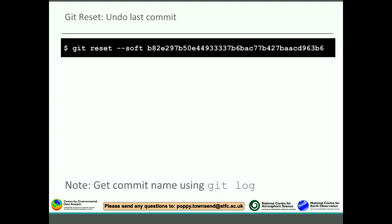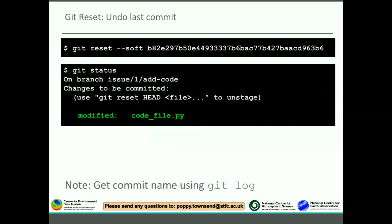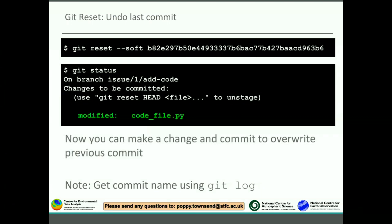To undo your last commit - say you've made a commit and realized there was a mistake - you can use git reset --soft followed by your git reference (a commit hash). You can get the commit hash using git log, which shows all the hashes for your recent commits. After a soft reset, the files are ready to be committed again with the changes still in place. You can then go into your code file, make the corrections, and recommit - it will overwrite the previous commit.